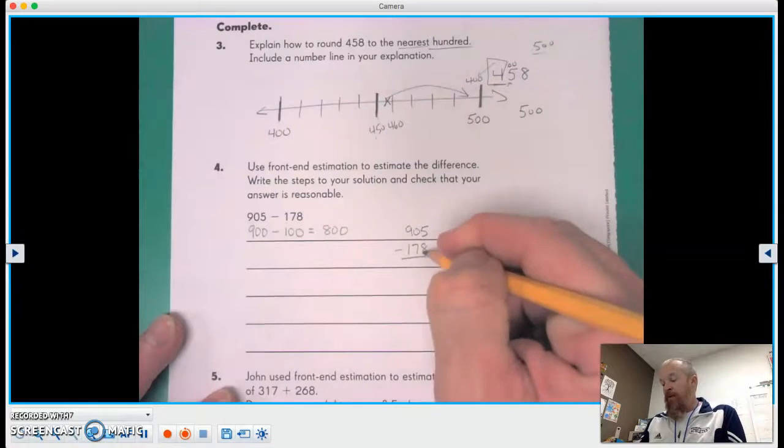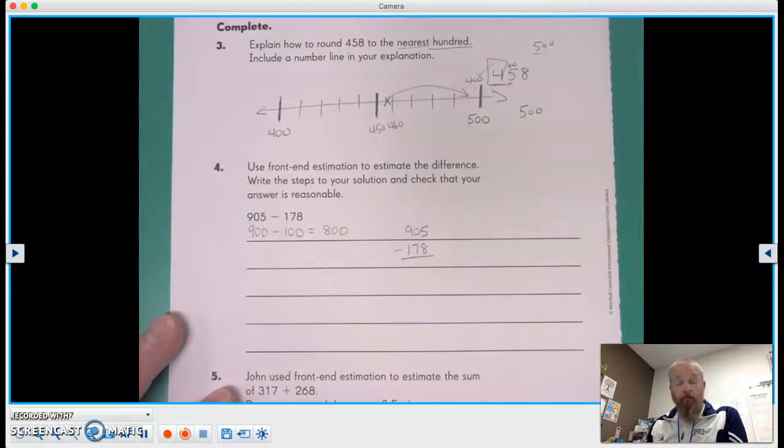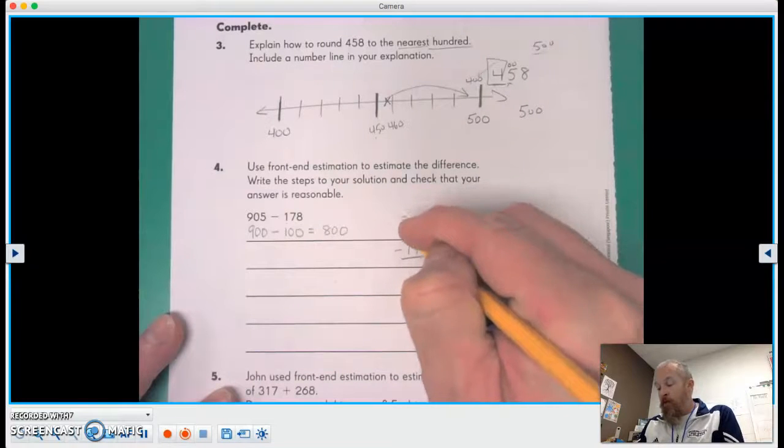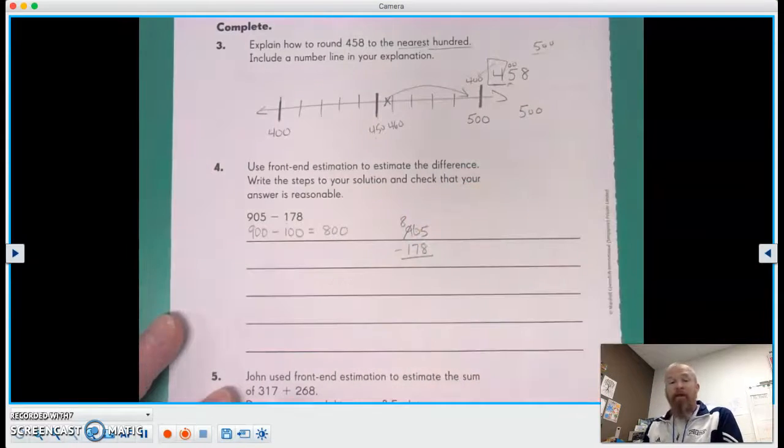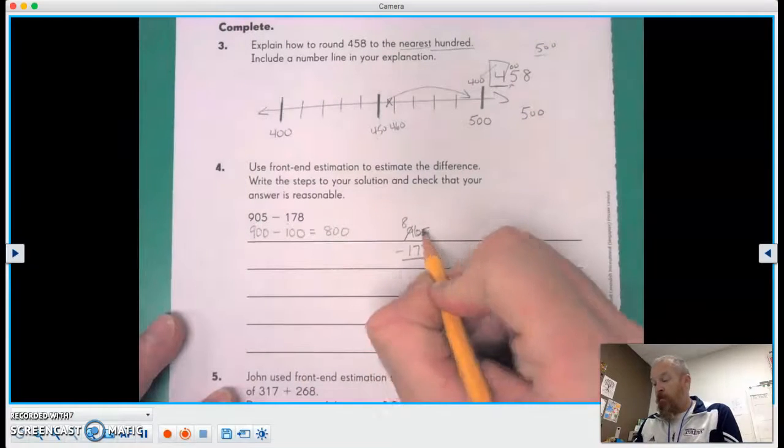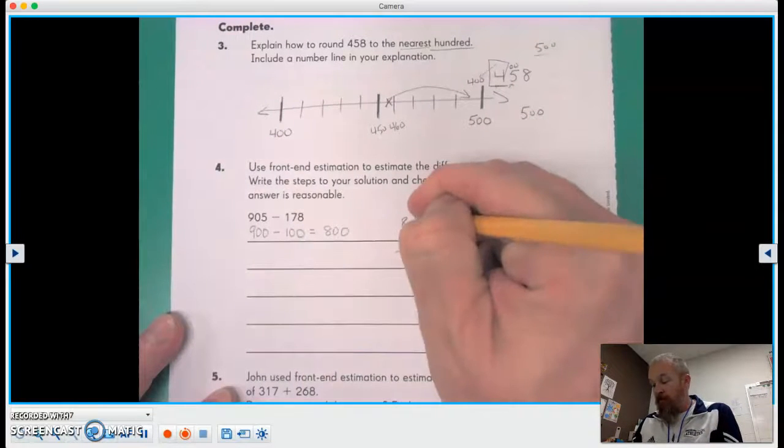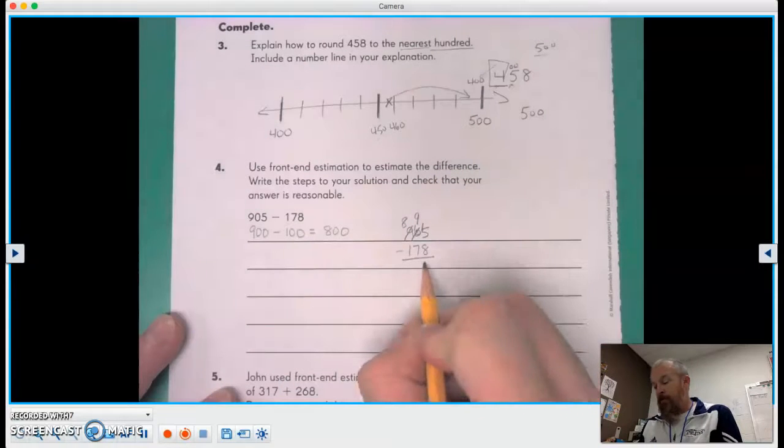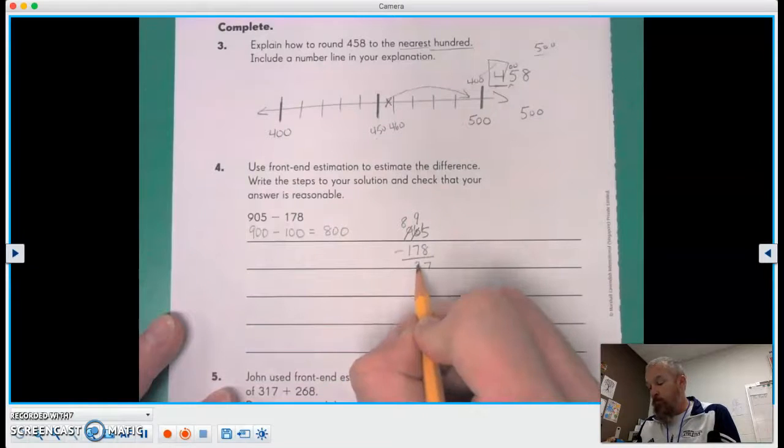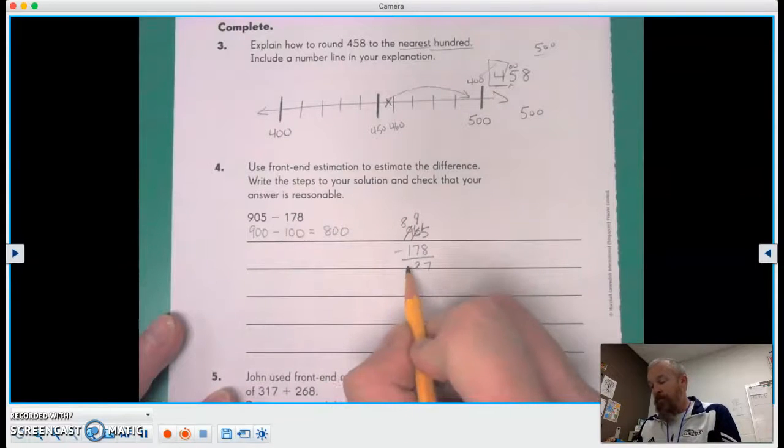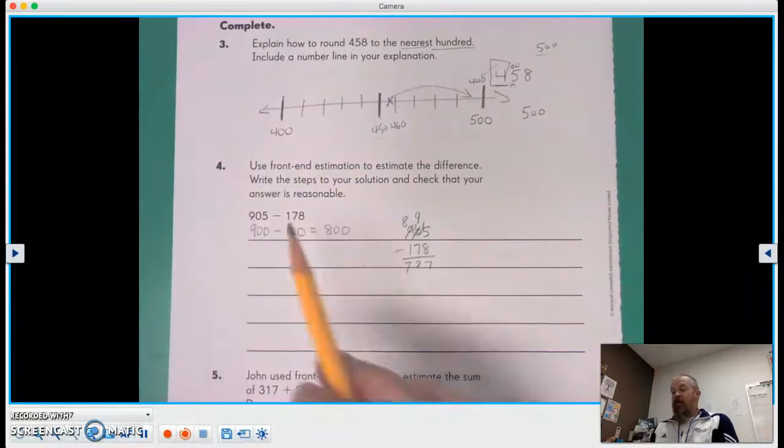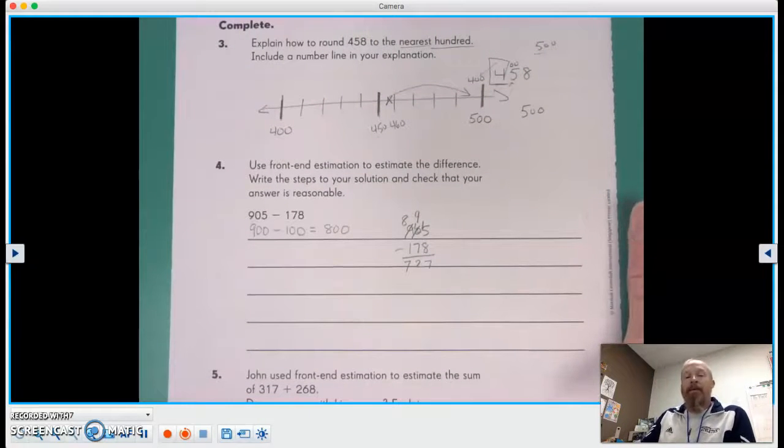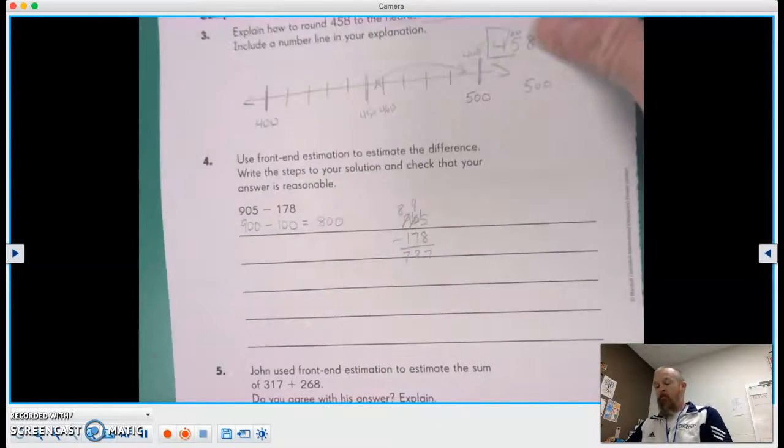Five minus eight, oh, we can't do it, right? More on the floor, we have to borrow from next door. There's nothing to borrow from, so we have to make a little change there. Now there's 10 there to borrow from. So we're gonna cross out the 10 and make a nine. Add the one over, so 15 minus eight is seven. Nine minus seven is two. Eight minus one is seven. So 727 is fairly close to 800. That is a reasonable answer.